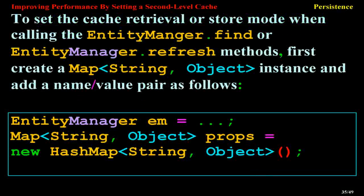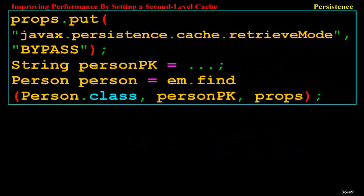To set the cache retrieval or store mode when calling EntityManager.find or EntityManager.refresh methods, first create a Map<String, Object> instance and add a name-value pair as follows: EntityManager m = ...; Map<String, Object> props = new HashMap<String, Object>(); props.put(javax.persistence.cache.retrieveMode, BYPASS); String personPK = ...; Person person = m.find(Person.class, personPK, props).